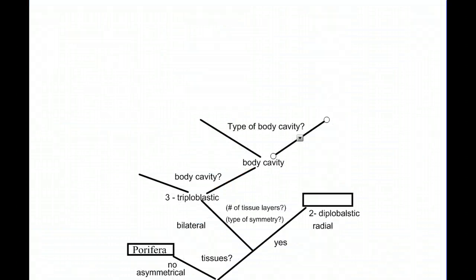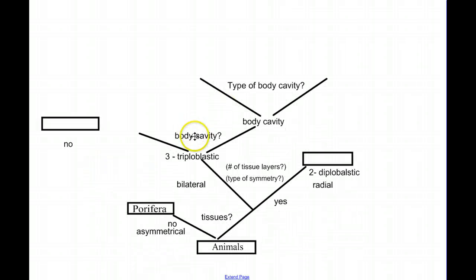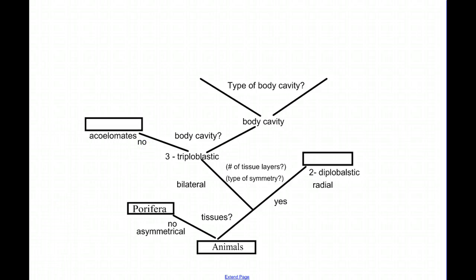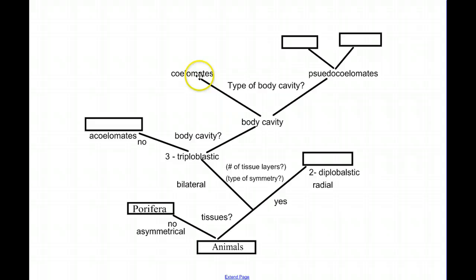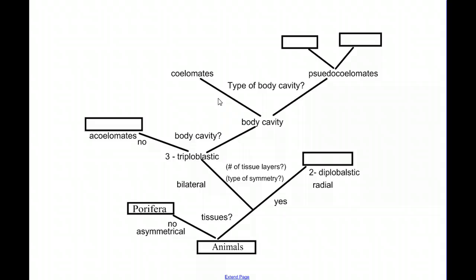When we get to coelomates, we are at a very significant place in the evolution and diversity of animals. We have true tissues, three layers of tissues, bilateral symmetry, and a true body cavity for space for complex organs and systems. At this point in animal evolution, there is a distinct divergence between what we call the protostomes and the deuterostomes.